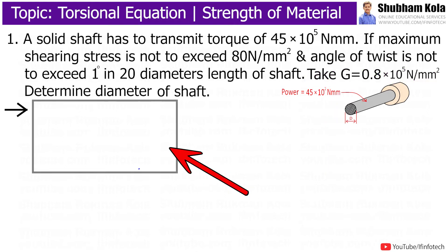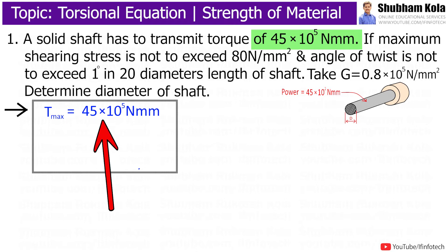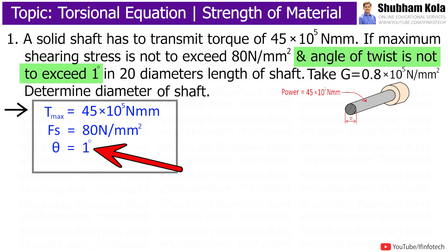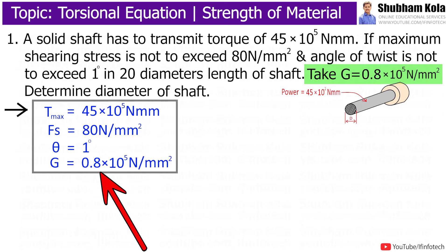First we will write down the data which has been provided. Maximum torque is 10×10⁵ Nm, permissible shear stress Fs is 80 N/m², and angle of twist theta is not to exceed 1 degree. G is 0.8×10⁵ N/m².